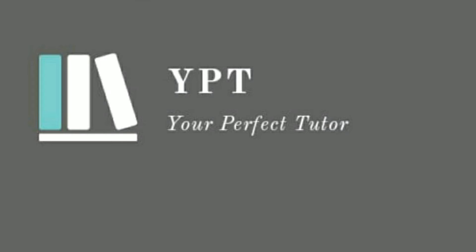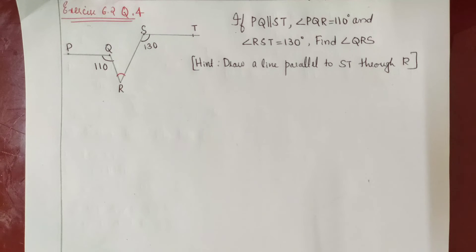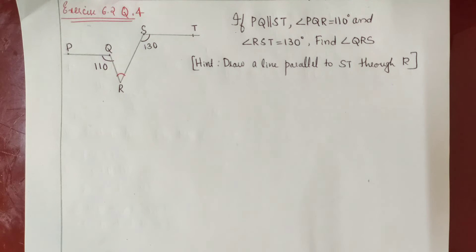Welcome to your perfect tutor. Let's check exercise 6.2 question number 4. In the given figure, if PQ is parallel to ST, angle PQR is equal to 110 degrees and angle RST is equal to 130 degrees, find angle QRS.